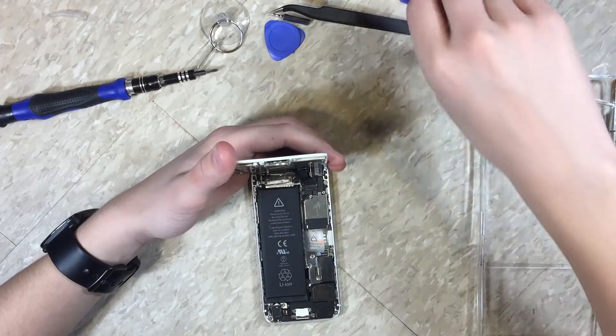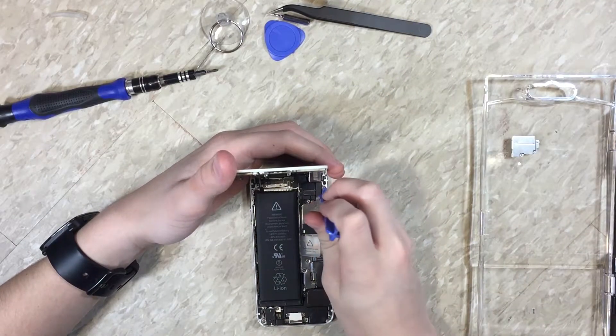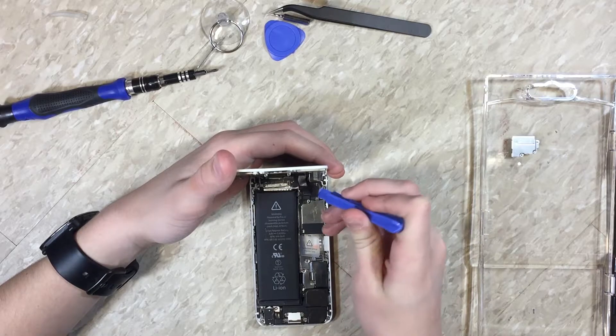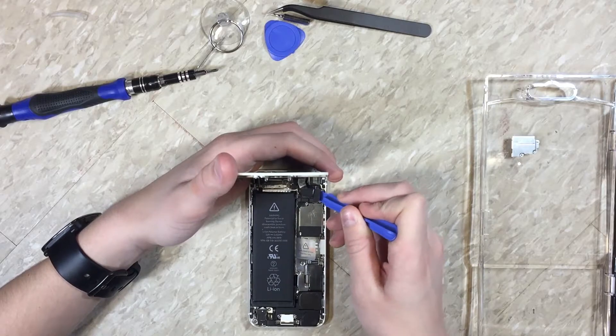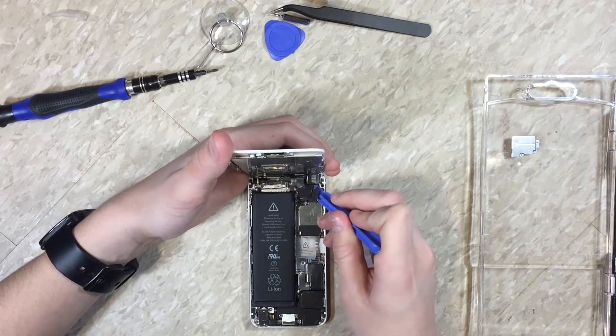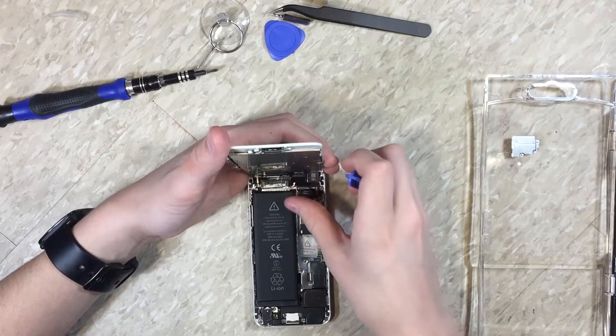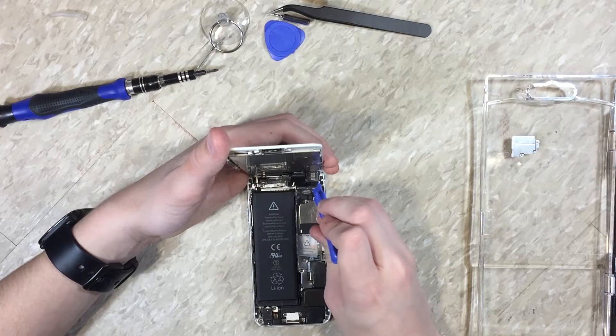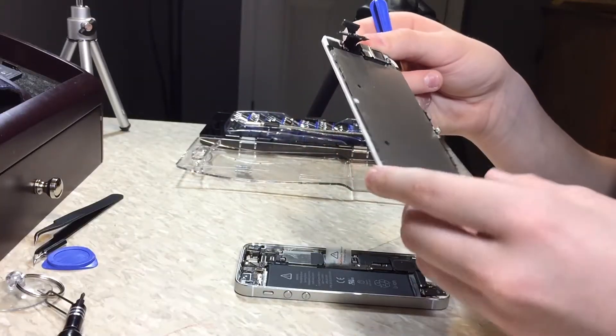The next thing you want to do is grab your little plastic tool, and unlatch these three ribbon cables up here that connect the display. And there we go, the display is now off.